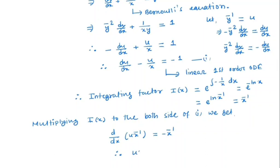So, we get u x inverse is equal to integral minus x inverse dx plus c which is nothing but minus ln x plus c.